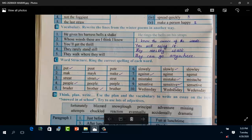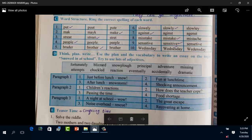Question number C is word structure: ring the correct spelling of each word. In the first one, the first is correct, P-U-T, put. Number two, make, M-A-K-E, the last one. Number three, the second one, S-T-R-E-E-T, street. Number four, the first one, P-E-O-P-L-E, people. Number five, the second word, brother, B-R-O-T-H-E-R. Number six, slowly, S-L-O-W-L-Y. Number seven, against, A-G-A-I-N-S-T, the first one. Number eight, mistake, M-I-S-T-A-K-E, the second one. Number nine, sensitive, S-E-N-S-I-T-I-V-E, the second one. Number ten, Wednesday, W-E-D-N-E-S-D-A-Y. Number D: think, plan, write. Use the plan in the vocabulary, write an essay on the topic snowed in at school. Hints are here, keywords are here, you have to write the essay yourself.